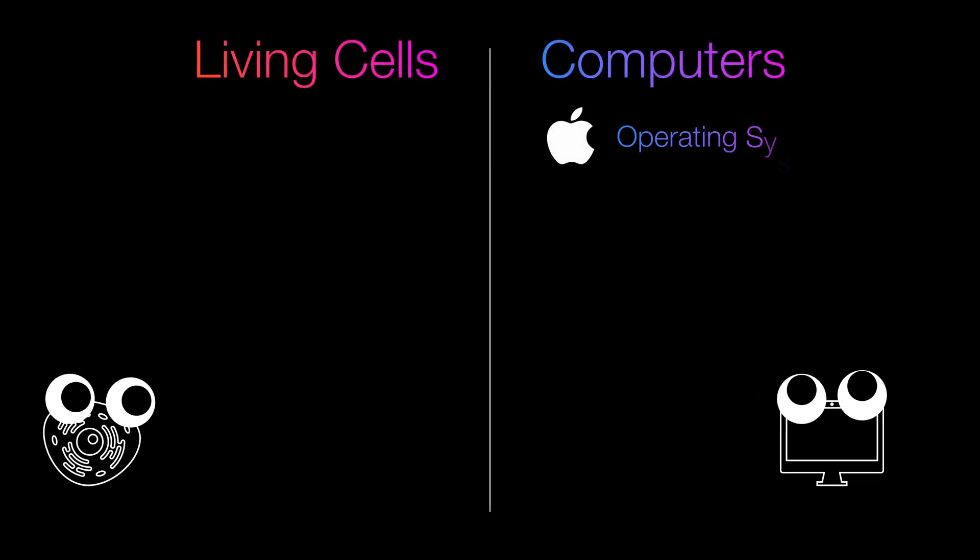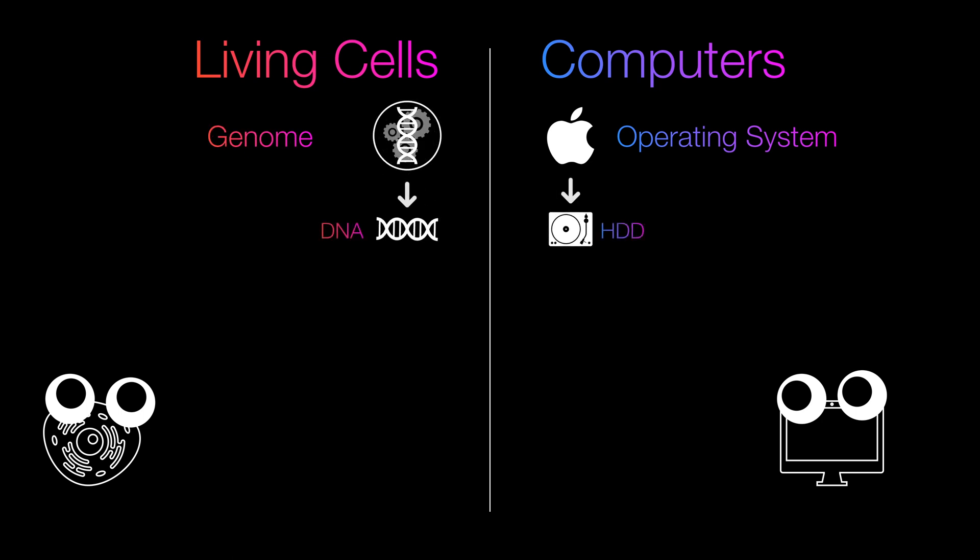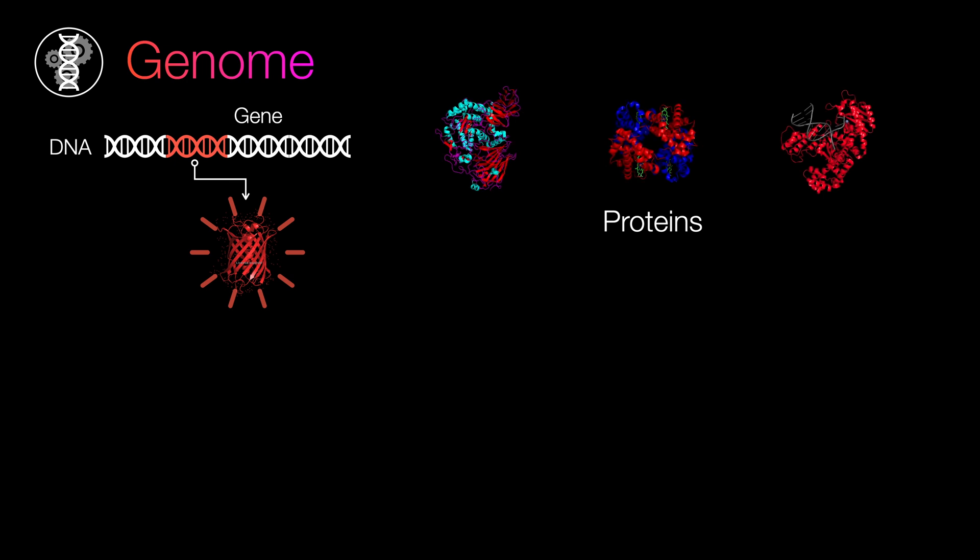So continuing with our computer analogy, every cell has its own operating system. This operating system is known as its genome, and the media this genome is written upon is known as DNA. The genome contains genes, which contain the instructions for making proteins, little nanomachines that perform functions for the cell. For example, breaking down food, carrying around oxygen, replicating DNA, and pretty much everything else.